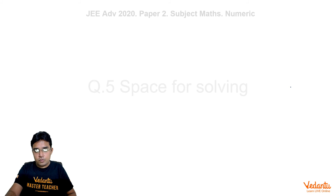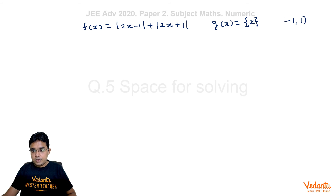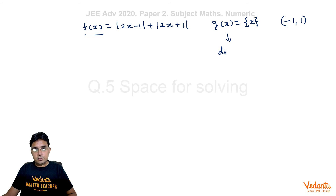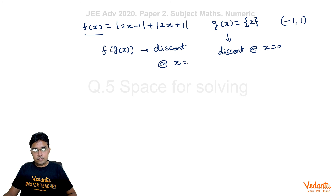Now a second method. f(x) = |2x-1| + |2x+1| is always continuous. But g(x) = {x} is discontinuous only at integer values of x. In the interval (-1,1), that means g(x) is discontinuous only at x = 0. So for f(g(x)), we can expect discontinuity only due to the discontinuity of g(x), which is at x = 0. This gives c = 1.